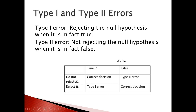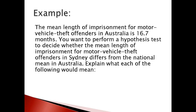We can classify these in a simple table. If H₀ is true and we do not reject it, that's the correct decision. But if H₀ is true and you still reject it, that's a Type 1 error. Similarly, when H₀ is false, if you reject H₀ that's the correct decision. But if you do not reject H₀ even when it's false, that's a Type 2 error.